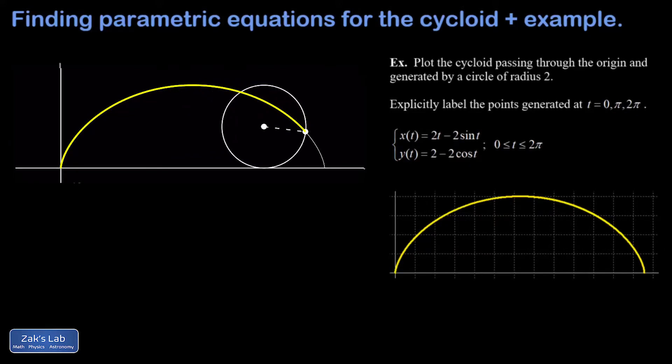As you can see in the animation, a cycloid can be defined by marking a point on the edge of a circle. Then, with the circle rolling along a straight line, the motion of that point defines the cycloid curve.